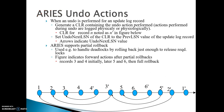The ARIES undo action is important: when an undo is performed for an update log record, it generates a CLR (Compensation Log Record) containing the undo action performed, logged physically or physiologically. The CLR records how many transactions have been performed. ARIES supports partial rollback — for example, to handle deadlocks by rolling back just enough to release required locks. The figure shows forward action after partial rollback: actions 1, 2, 3, 4 — when rolled back, the third action is performed again.